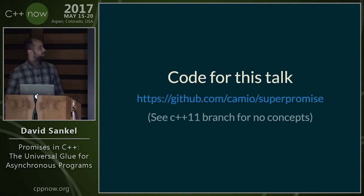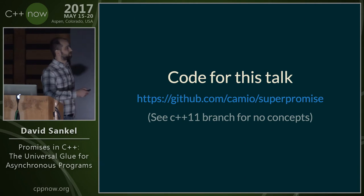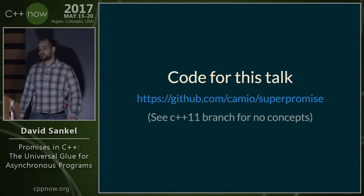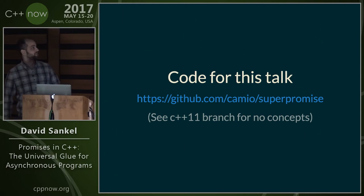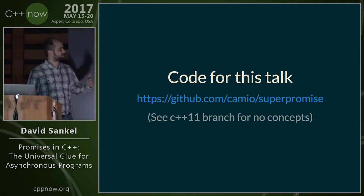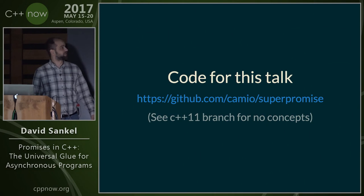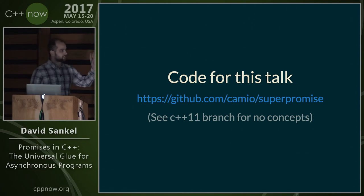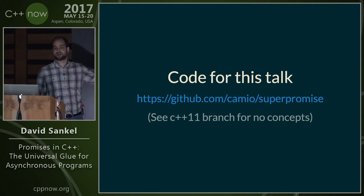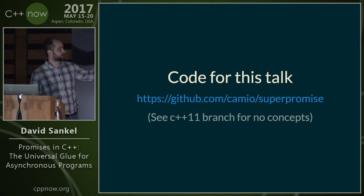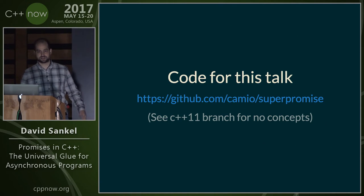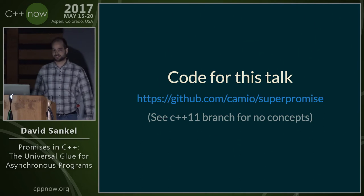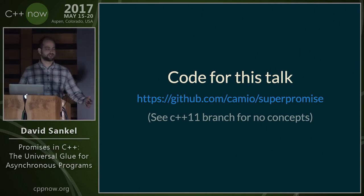The code for this talk is available here. We just got permission to make it open source a few hours ago and I was able to upload it. We have an Apache license, so you can use it wherever. The main branch is written using concepts, and there's also a C++11 branch that doesn't have the concepts stuff in it, since concepts is a TS and not actually part of the language yet.